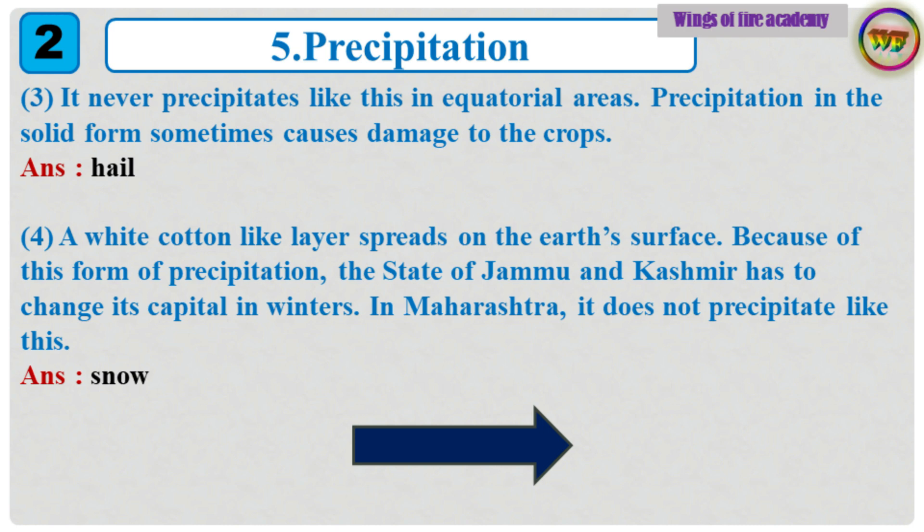Precipitation in the solid form sometimes causes damage to the crops. Answer: Hail. 4. A white cotton-like layer spreads on the earth's surface. Because of this form of precipitation, the state of Jammu and Kashmir has to change its capital in winters. In Maharashtra, it does not precipitate like this. Answer: Snow.